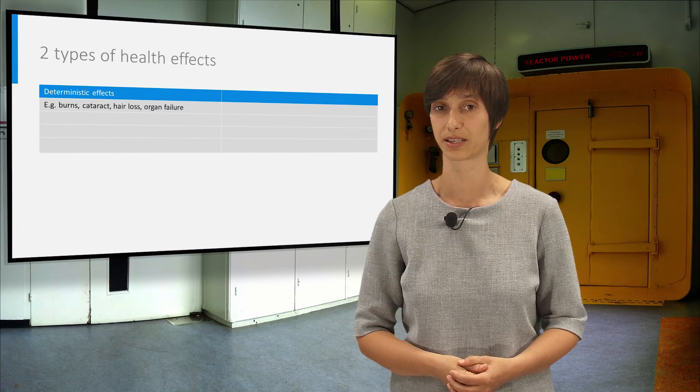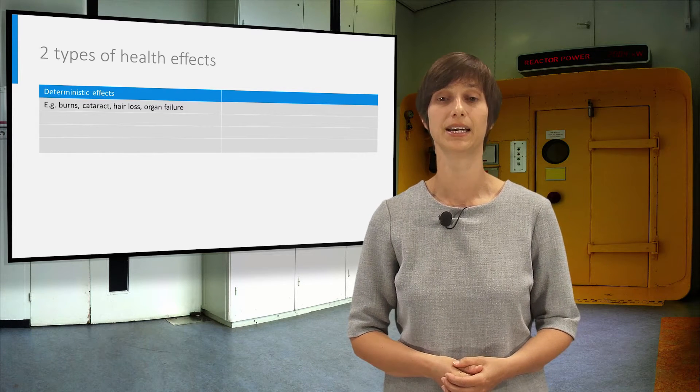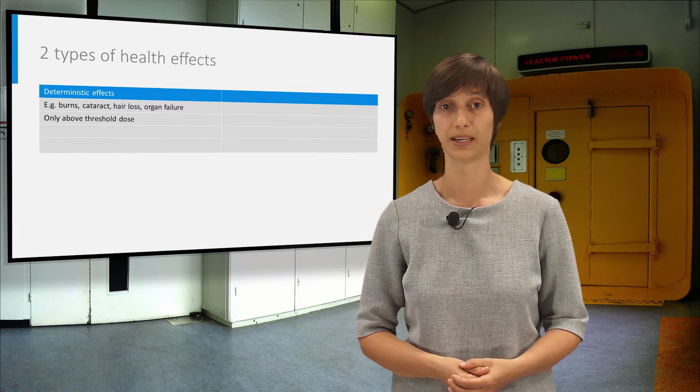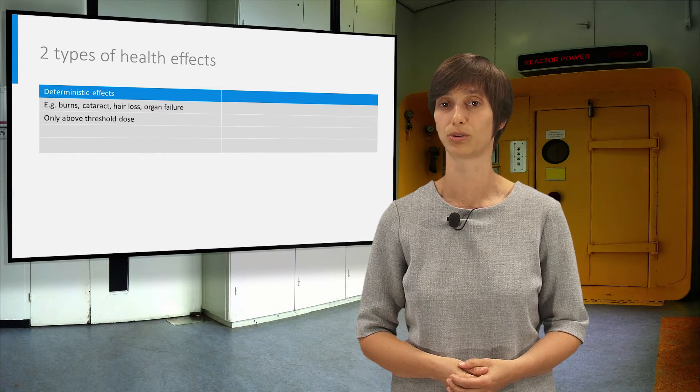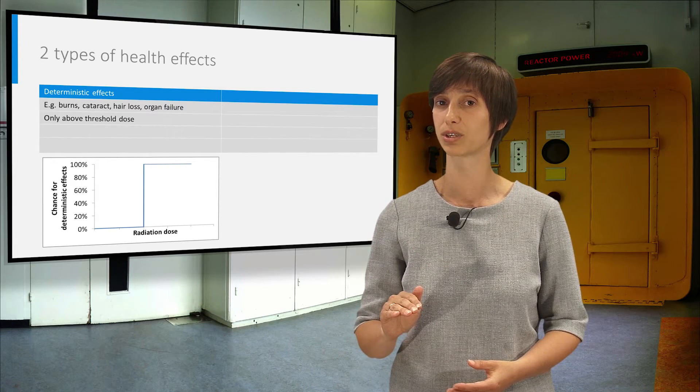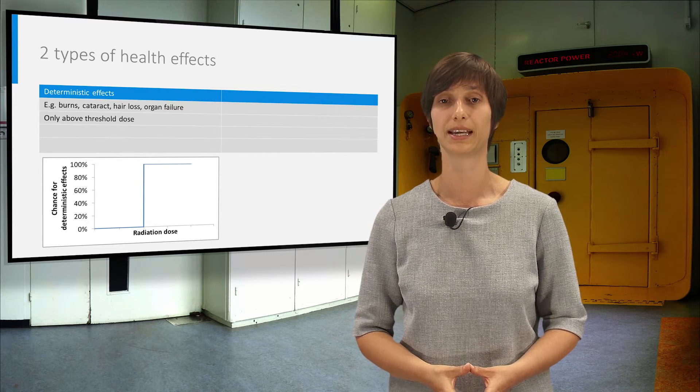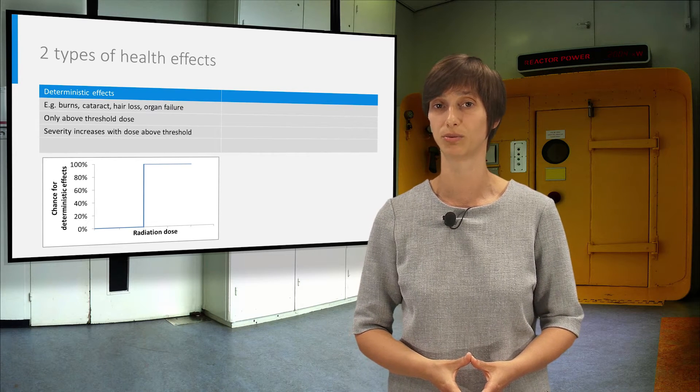Firstly, we have the deterministic effects, such as burns, cataract and in very severe cases also hair loss and organ failure. These effects all have a certain threshold dose. Below the threshold dose, these effects do not occur at all, while above the threshold, they occur with certainty and the severity increases with the dose.